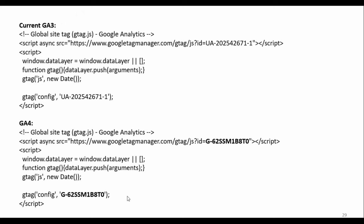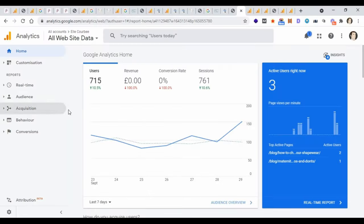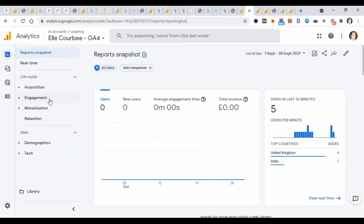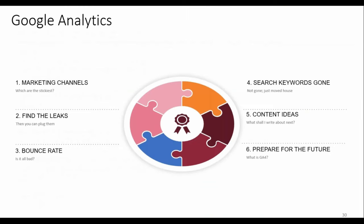If you don't add this code now and go straight to GA4 in the future, you won't have any historical data, so year-on-year and month-on-month reports won't be meaningful. I'm still getting my head around GA4 — it looks quite different. GA3 talks about audience, acquisition, behavior, and conversions, whereas GA4's language is around engagement, monetization, and retention. Some metrics like user sessions won't be there anymore. We've covered marketing channels, plugging leaks, bounce rates, keyword data, content ideas, and GA4. Thanks very much for listening.